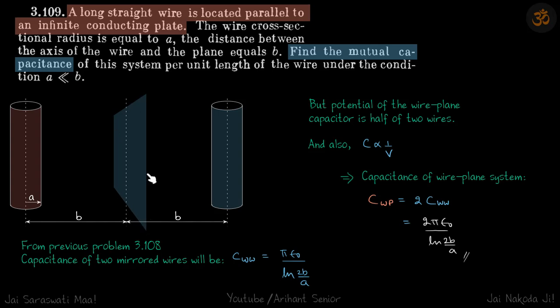Because we have a conducting plate, we're going to use the mirror method. Whenever you have a conducting plane, it acts as a mirror and it will reverse the charges. The dimensions will be the same but the charges will be reversed. So if this is lambda, then you will have minus lambda here.